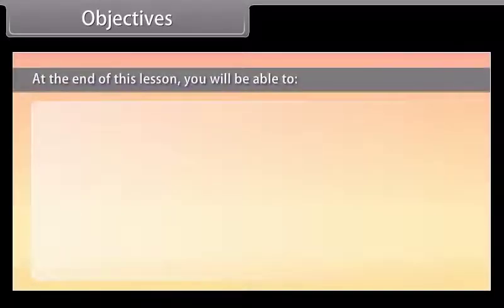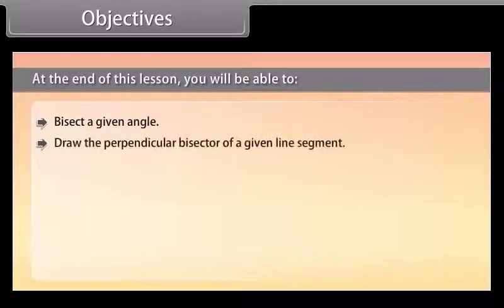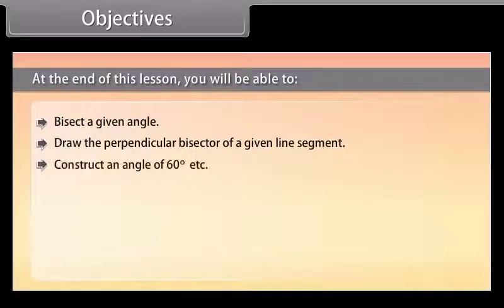At the end of this lesson, you'll be able to bisect a given angle, draw the perpendicular bisector of a given line segment, and construct an angle of 60 degrees.